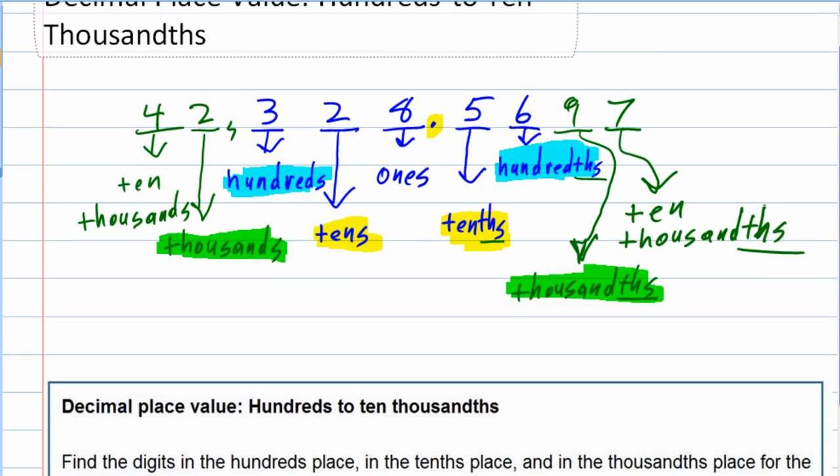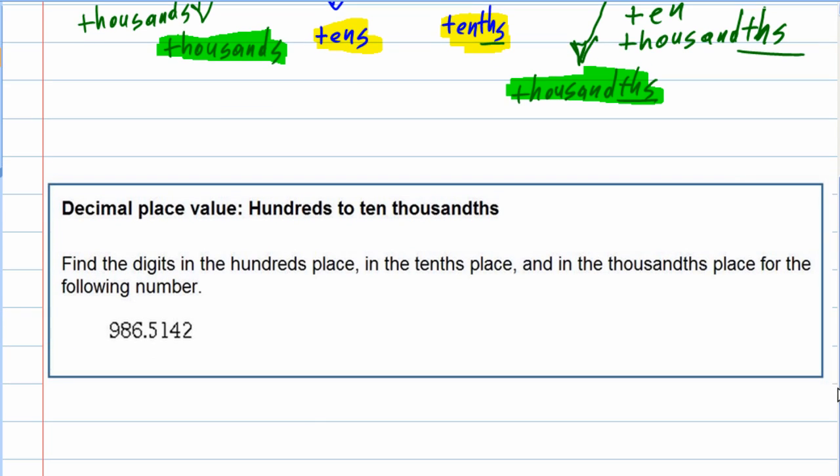So let's look at our problem. Decimal place value. We're trying to find the digits in the hundreds place—we want that one—in the tenths place—that's another digit that we want—and then the thousands place for the following number. We've got some digits in there; those are the ones we're looking at. We definitely want to be careful with the THS.